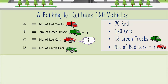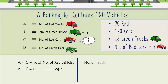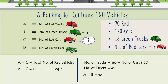A plus C represents the total number of red vehicles and that's equal to 70 — let's call it equation 1. The number of trucks equals the total number of vehicles, 160, minus the number of cars, 120, giving us 40 trucks. This number of trucks can also be represented as A plus B — this is equation 2.